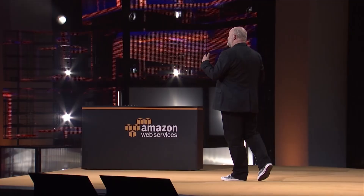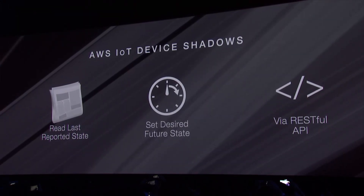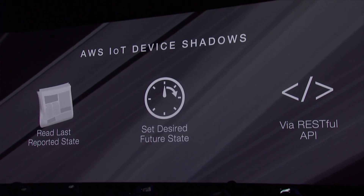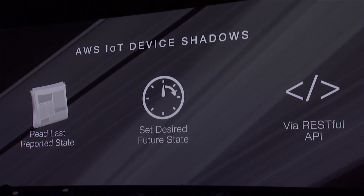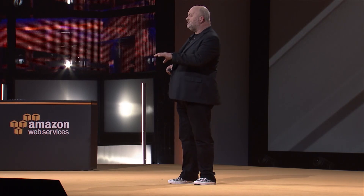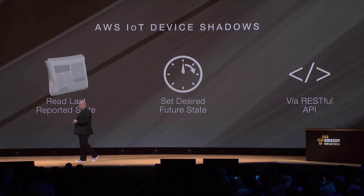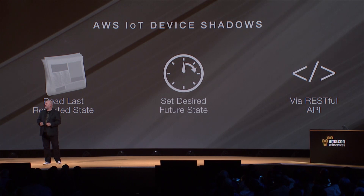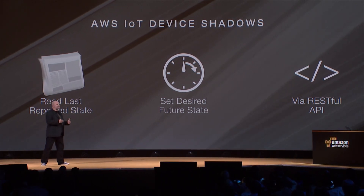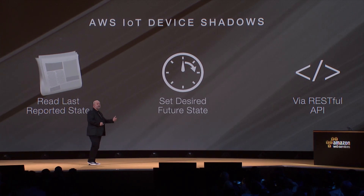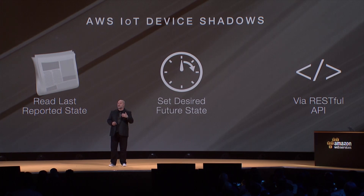Device shadows mean you can actually talk to the device shadow — either read the last reported state that the device has communicated, or set the actuators by specifying what state you want the device to be in. The device shadow will then take care of communicating with the device itself to drive that change. This is really cool because it lets you control your devices without needing specific knowledge of how to communicate with each device. And because these devices are not connected all the time, you can still program against the shadow to ensure that once the device comes online again, it goes to the desired state.